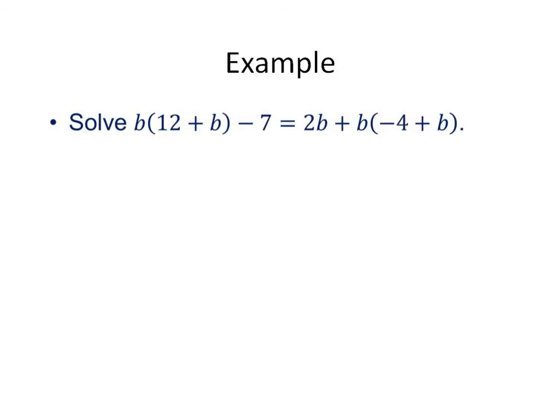One last slide we have here. If you notice in the very middle of the problem, there's an equal sign, so in this case we are solving for b. You're going to want to start out by distributing just like we just did. We're going to distribute b first. We're going to have 12b plus b squared minus 7 equals 2b. And we're distributing a positive b here, so it actually becomes minus 4b plus b squared.